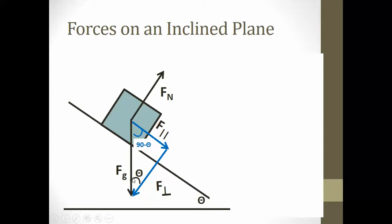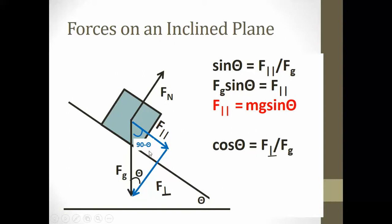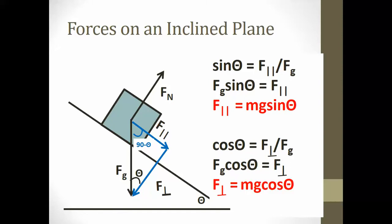Using trigonometry with angle theta: sine of theta equals opposite over hypotenuse, so sine(θ) = F_parallel / F_g, giving F_parallel = F_g · sin(θ) = mg·sin(θ). For the perpendicular component, cosine(θ) = F_perpendicular / F_g, so F_perpendicular = F_g · cos(θ) = mg·cos(θ). These two equations — F_parallel = mg·sin(θ) and F_perpendicular = mg·cos(θ) — are used for all inclined plane problems.